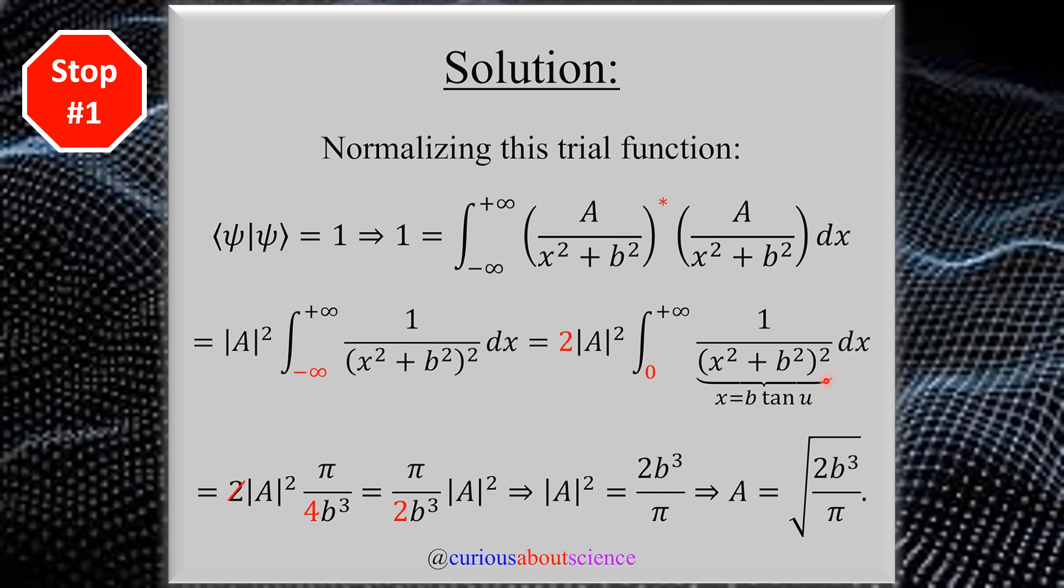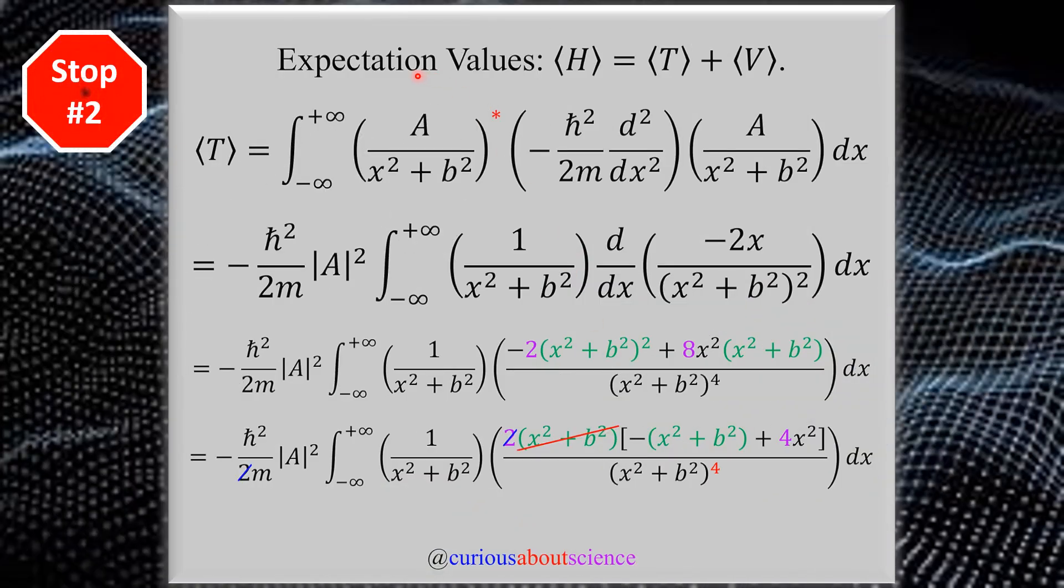Cool, now we can move on to the parameter b and see what we can do with that. But to do that we need to find the expectation values. So let's dive to stop number two. If we wish to analyze the impact of the parameter b on this setup, let's find the expectation value that we need for the Hamiltonian with the kinetic and potential terms T and V respectively. Don't forget the kinetic energy term has the differential operator.